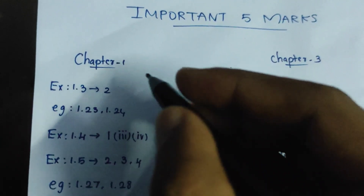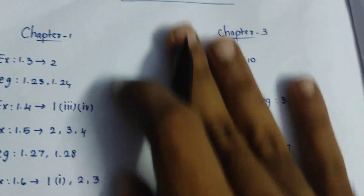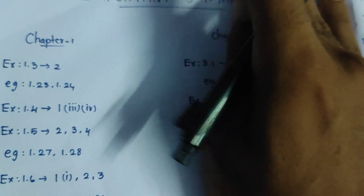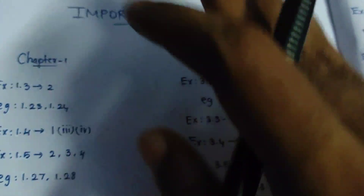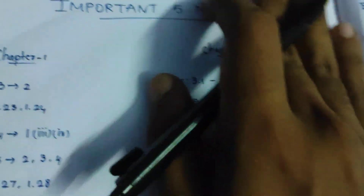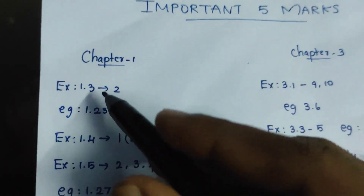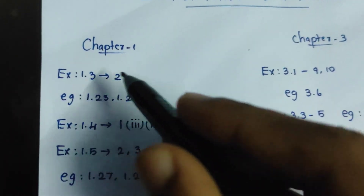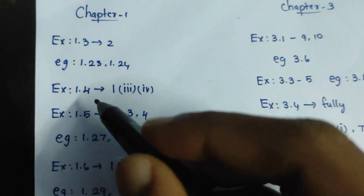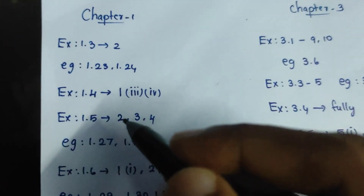Okay, let's get started. The first chapter — you can talk about the top. If you are in the top or middle, average 80% or 90%. If you want to write it, okay let's get started. Exercise 1.3, Example 1.23, Example 1.24. Exercise 1.4, first is 3.4. Exercise 1.5.